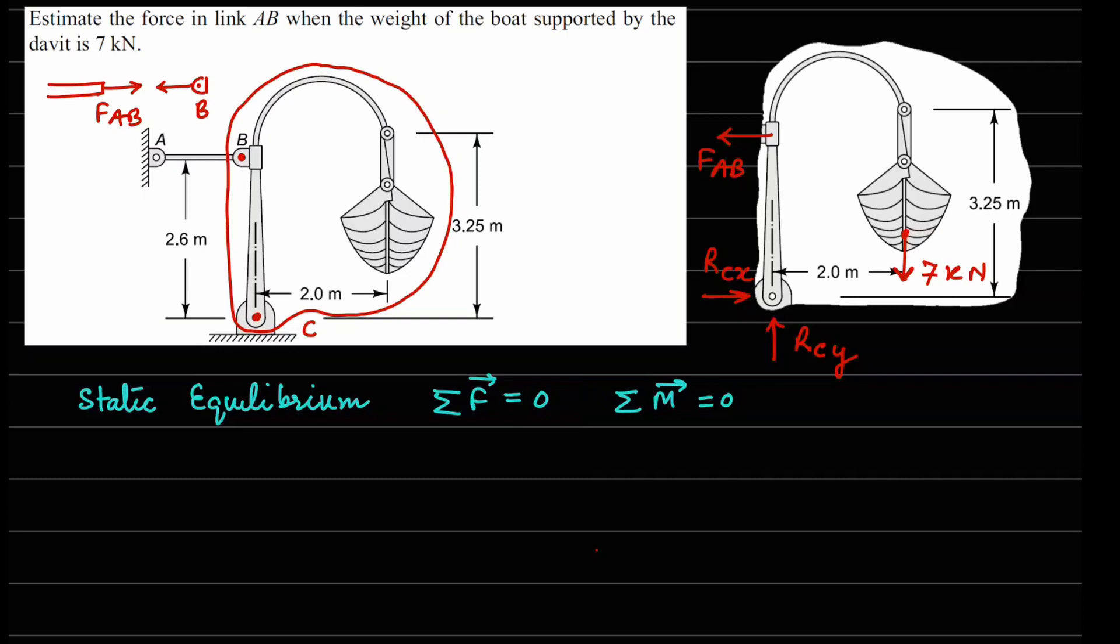So if I do force balance on this, I can see that in the X direction I have RCX minus FAB equals to zero. In the Y direction I have RCY minus 7 kilonewtons equals to zero.